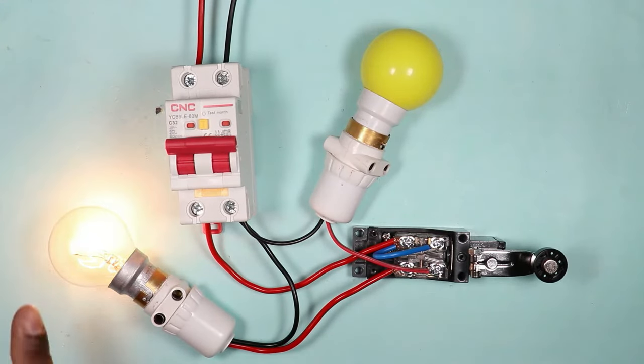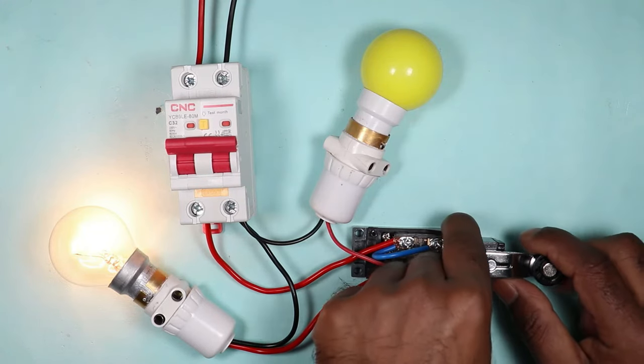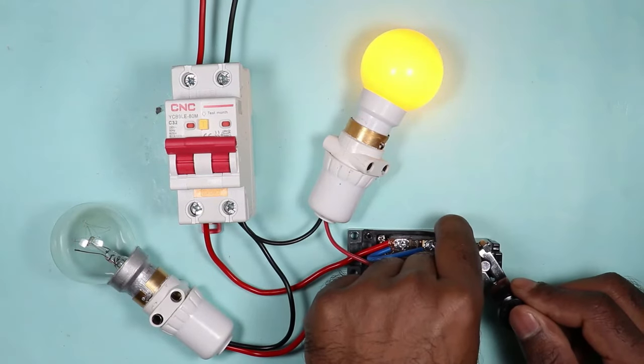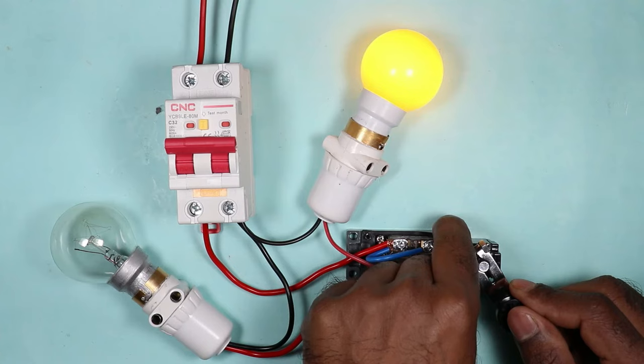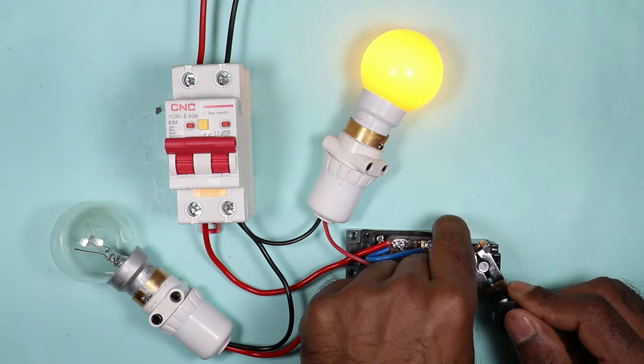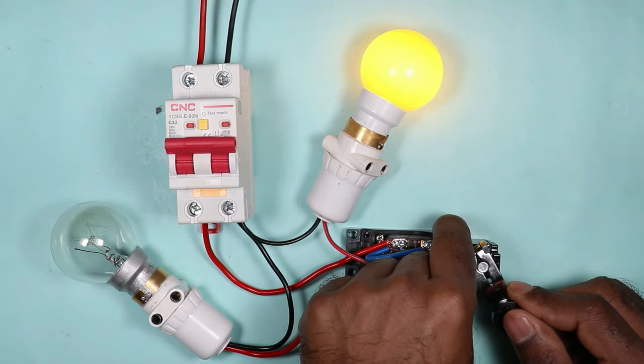On turning on the MCB, you can see this lamp is on now. This lamp was connected with NC contact, so it is turned on. Now if I operate this limit switch, then you can see lamp connected with NC is turned off and with NO turned on. This means, now limit switch is generating output signal to NO contact and stopped signal to NC contact.